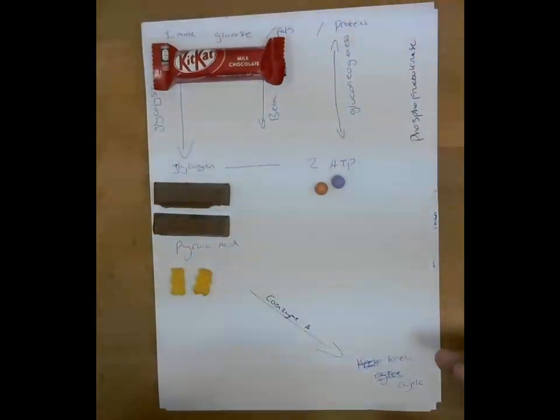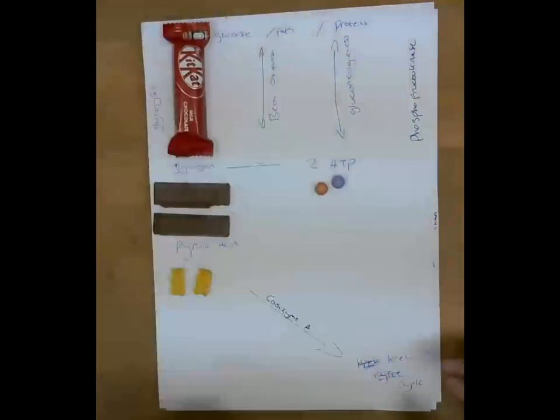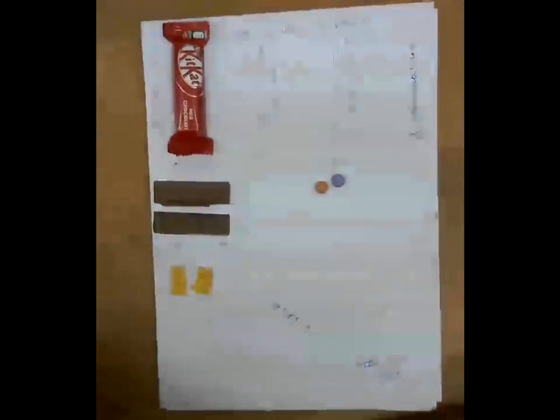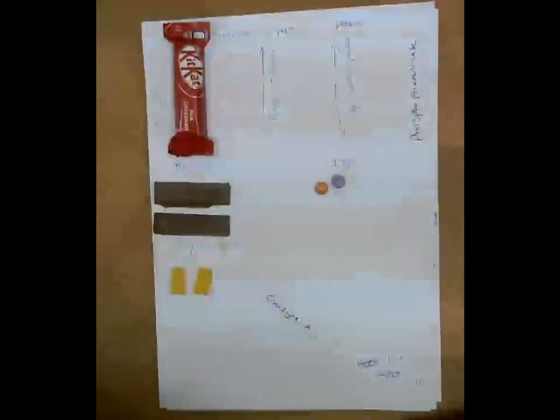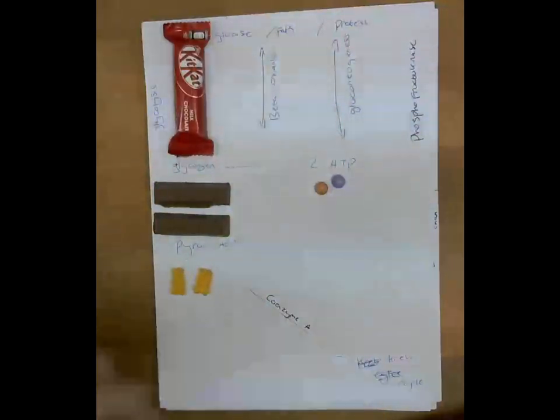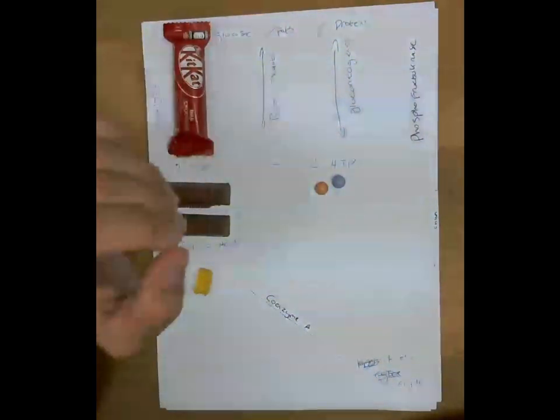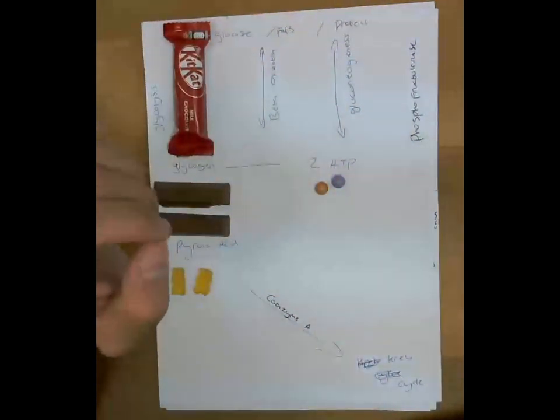Also, at the same time, what can happen is it can be created through fats. So the same process can be happened through fats. However, instead of it being glycolysis, this is something called beta oxidation. So the same process could happen with fats. It goes through beta oxidation, creates our glycogen, our pyruvic acid, and then the rest of it is the same. This can also go through proteins. So if it uses proteins as its energy source, it goes through a process called gluconeogenesis.